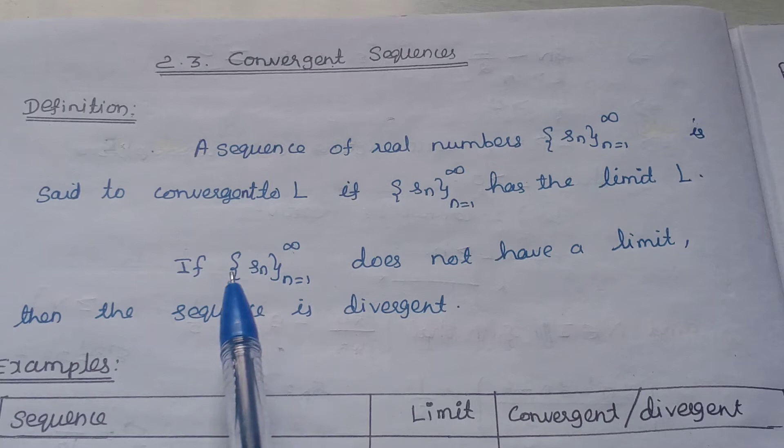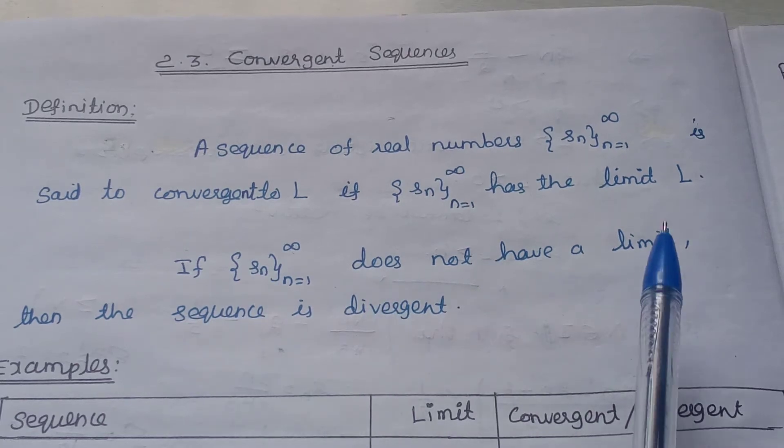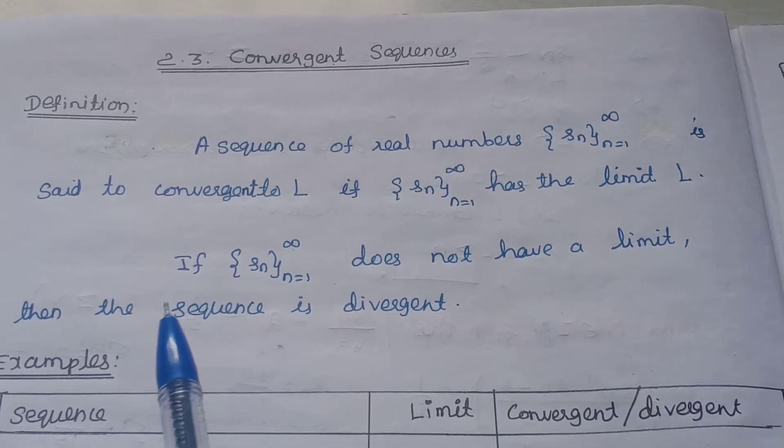Suppose there is no limit. If the sequence Sn does not have a limit, then the sequence is divergent.